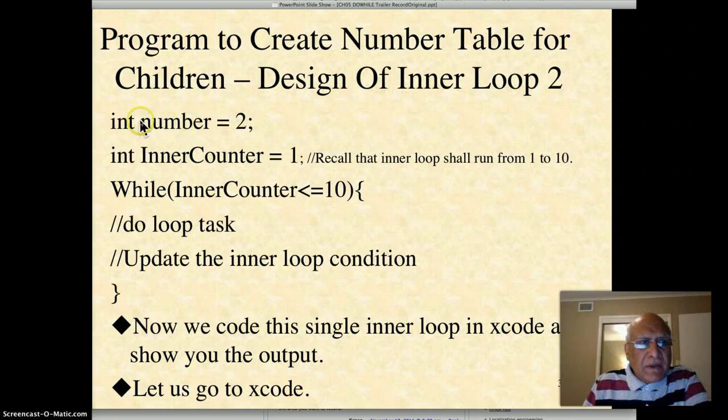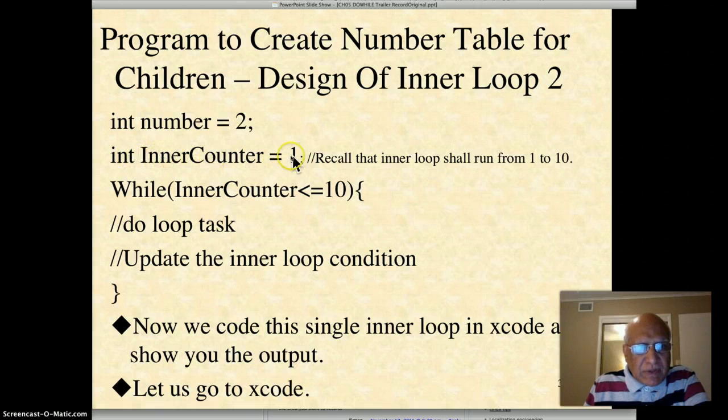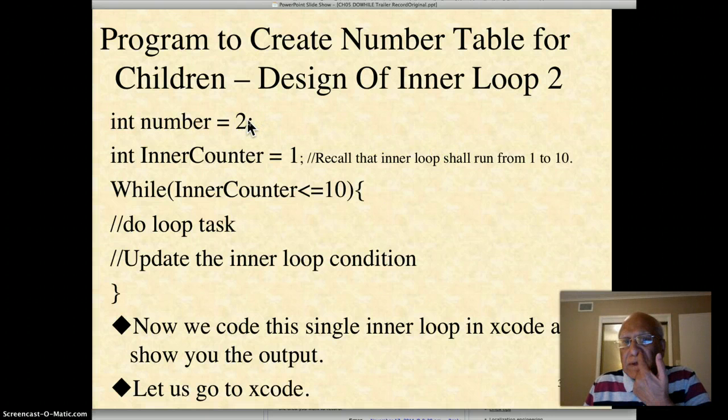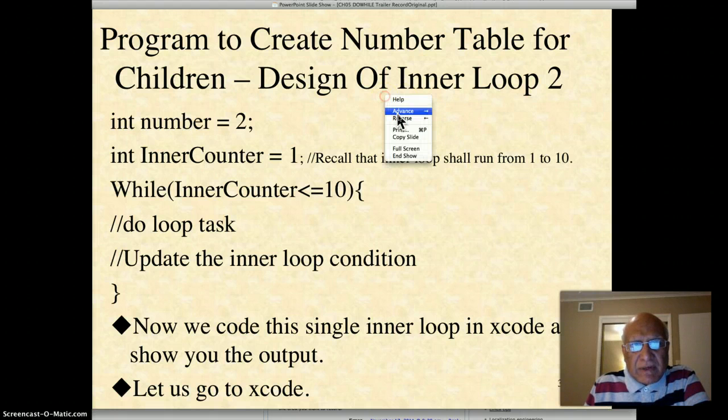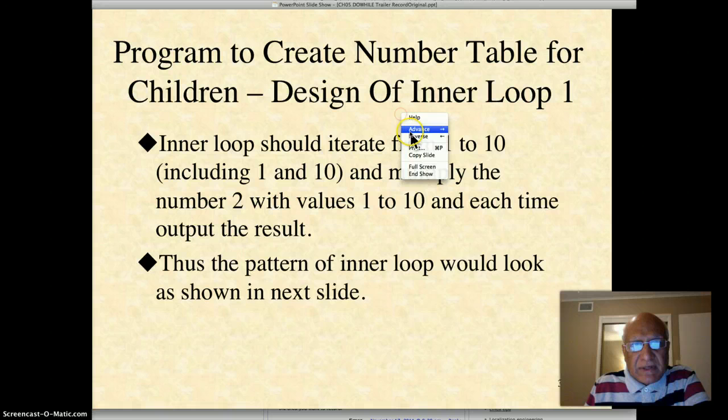Here, since I'm going to print a number table for 2, I declare a variable called int number = 2. But then I need an initialization of the inner loop counter, so I declare an inner loop counter, set it to 1. Recall that the inner loop, if I want to print a number table for 2, then the inner loop should run from 1 to 10, because if you remember a couple of slides ago I showed the table.